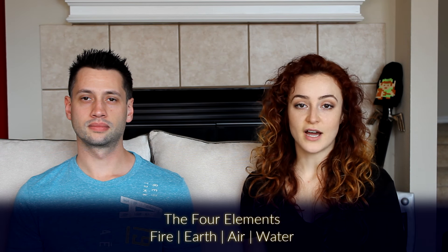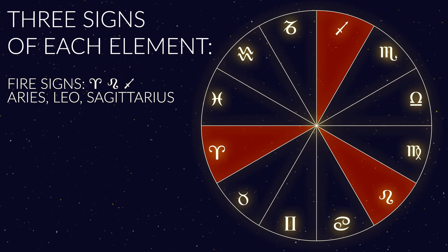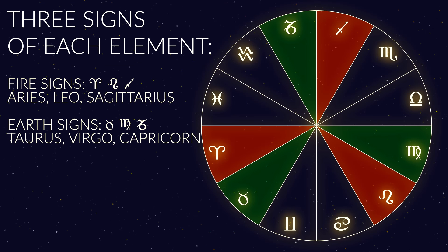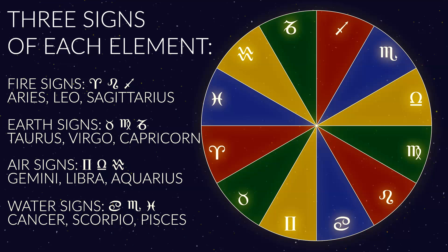So there are four elements: fire, earth, air, and water. And since there are 12 zodiac signs and four elements, math tells us that there are three zodiac signs of each element. We're going to talk about each element individually, but as we talk about these, you'll hear us mention something called qualities. You'll hear us use words like hot, cold, moist, and dry to describe the elements.